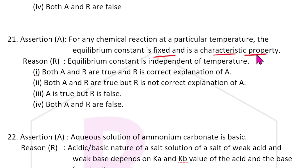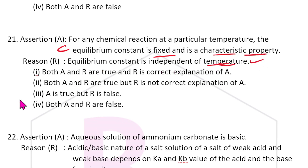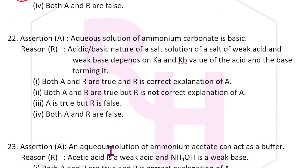Twenty-first question: For any chemical reaction at a particular temperature, the equilibrium constant is fixed and is a characteristic property — correct. But the reason states that the equilibrium constant is independent of temperature — this is wrong, it is dependent on temperature. So A is true and R is false. The answer is 3.